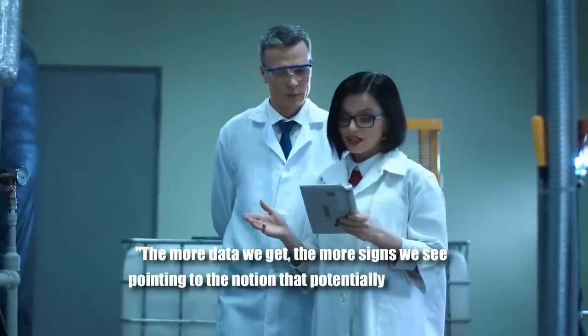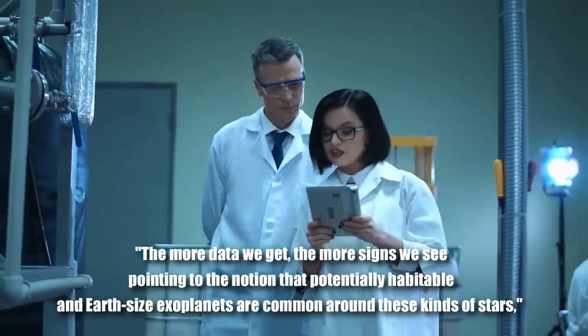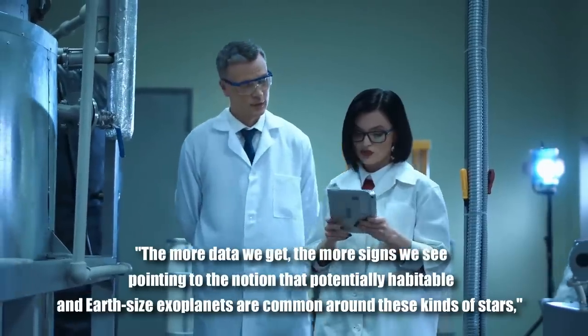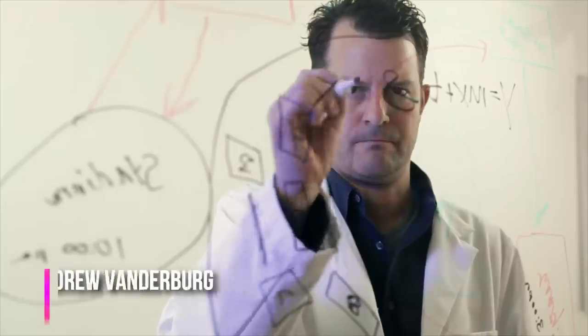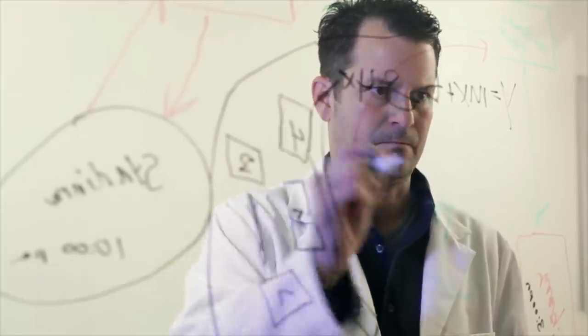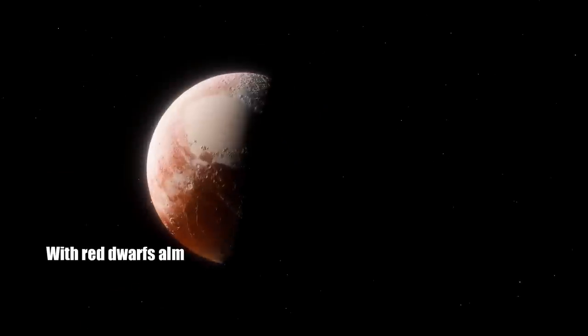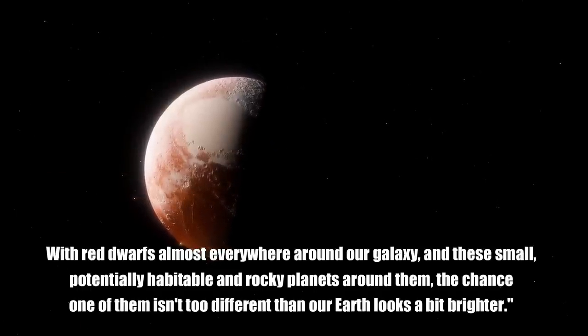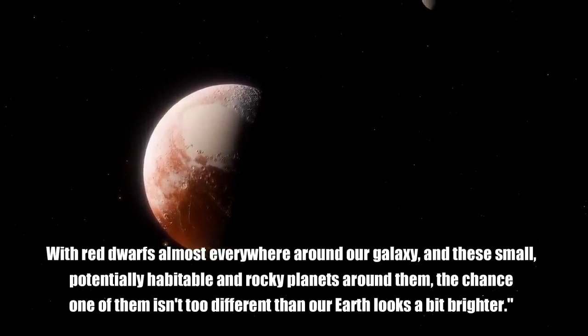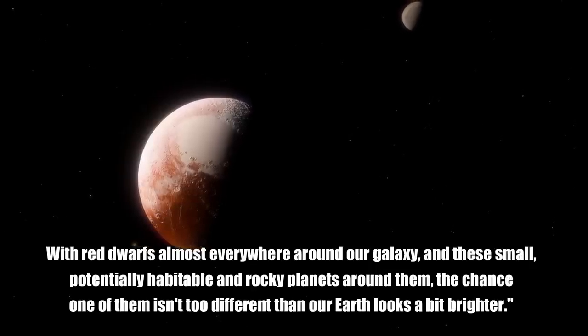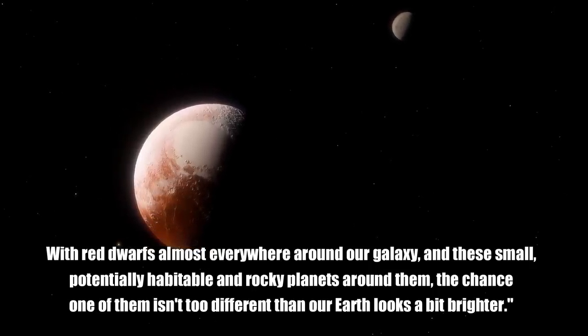The more data we get, the more signs we see pointing to the notion that potentially habitable and Earth-sized exoplanets are common around these kinds of stars. Study lead author Andrew Vanderburg, a researcher at the University of Texas at Austin said in the same statement, with red dwarfs almost everywhere around our galaxy and these small, potentially habitable and rocky planets around them, the chance one of them isn't too different than our Earth looks a bit brighter.